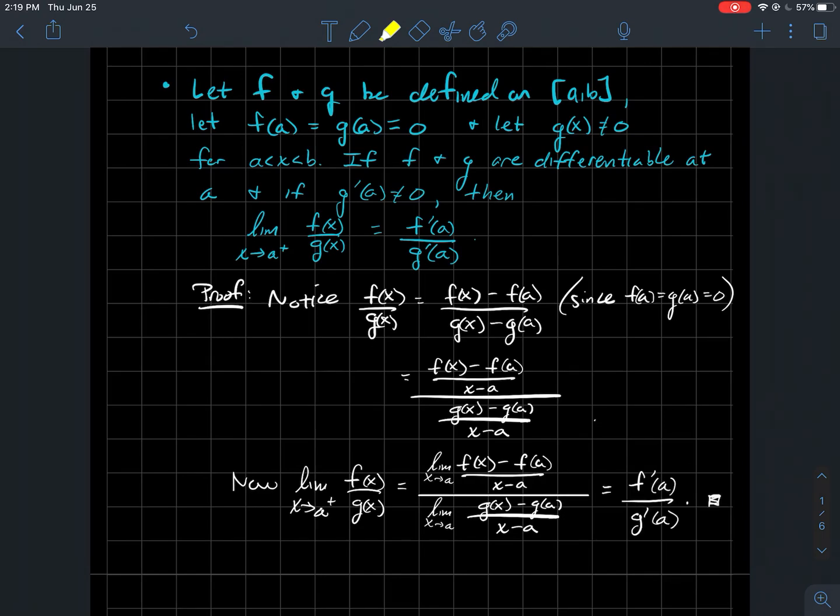Therefore, what do I get? I get the result. The limit of f over g as x approaches a, from the right in this case, is f prime over g prime.